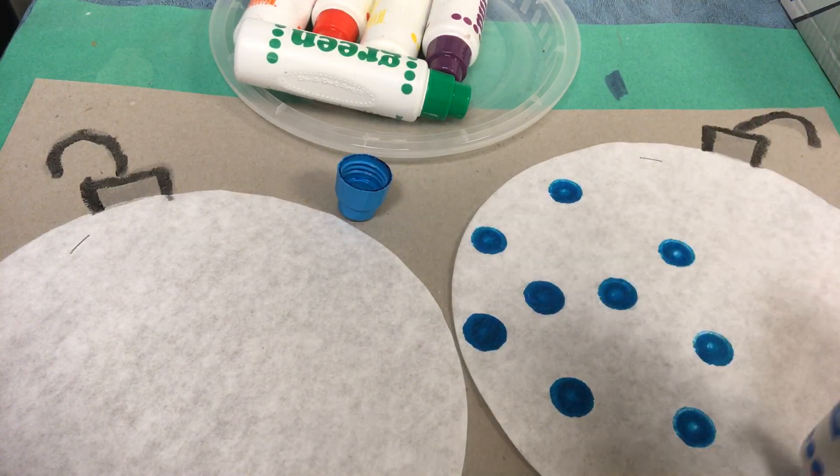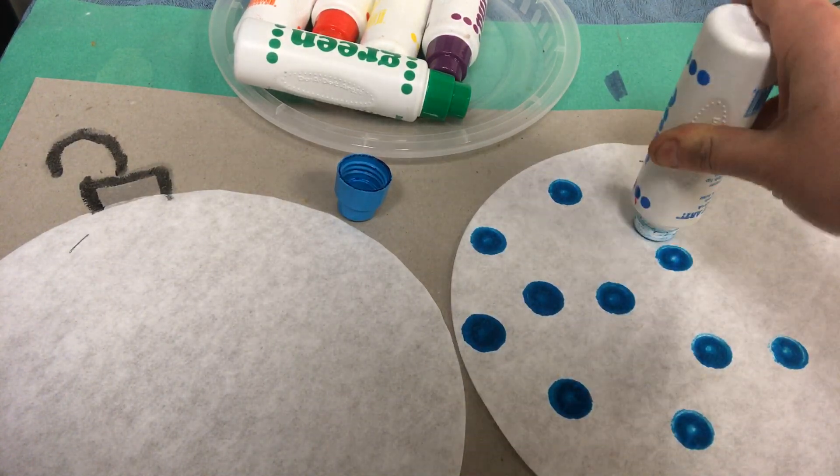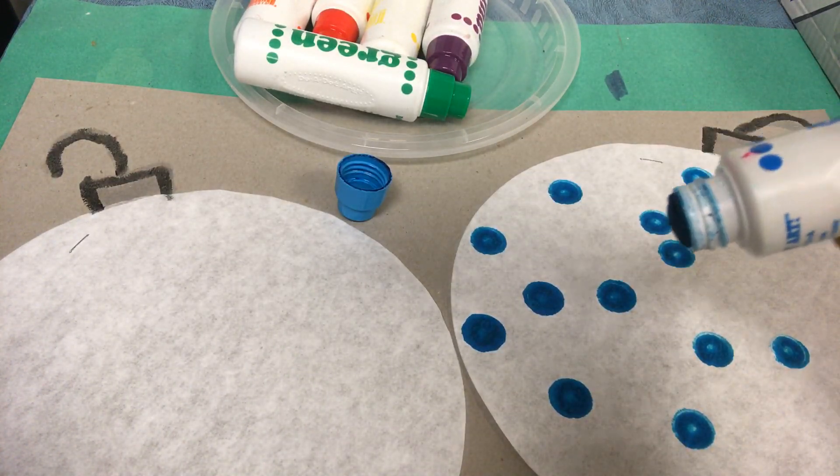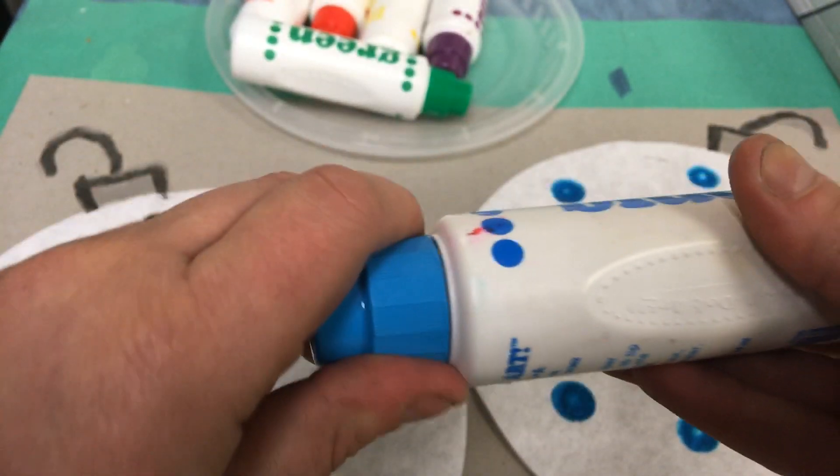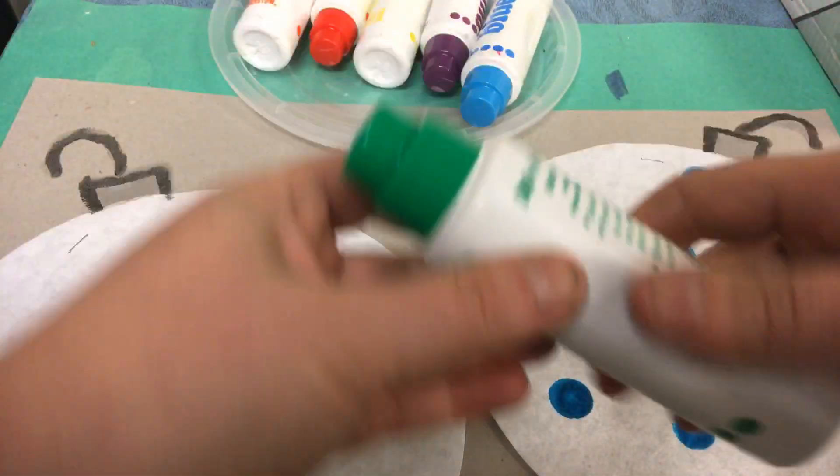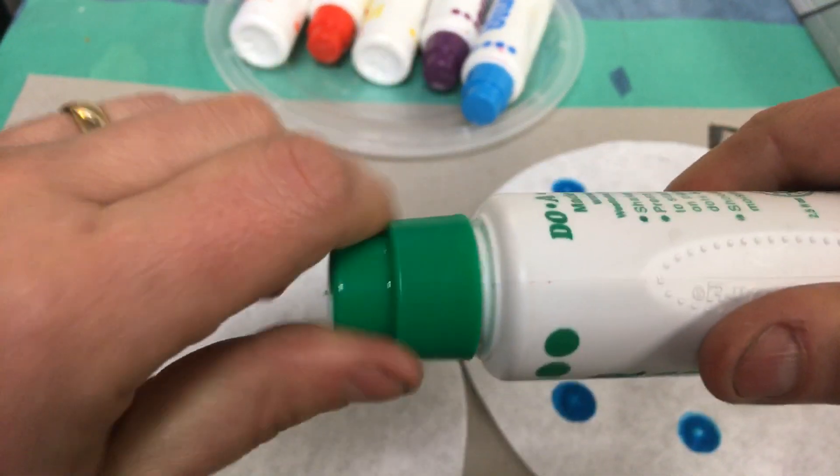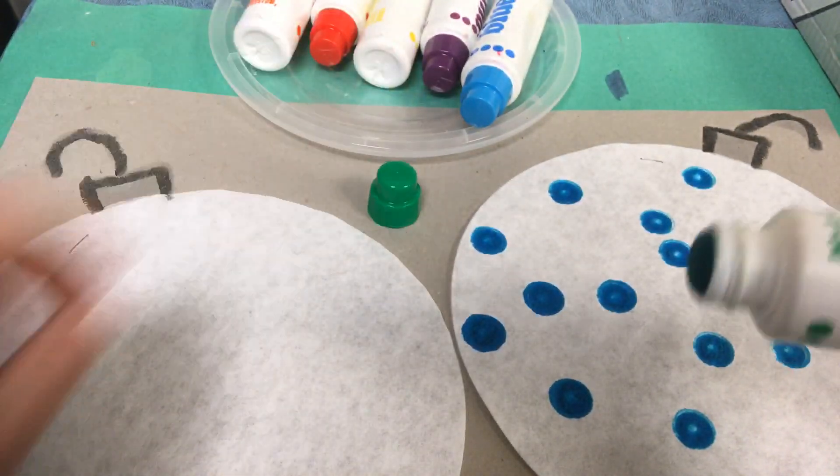We have two of them. When I decide I want to use a different color, I'm going to put the cap on, twist, twist, twist, get a different color. I think I want to use green. Twisting the cap off, keeping it close by.